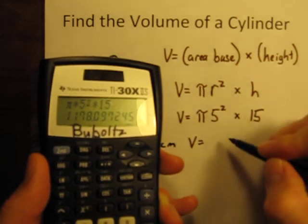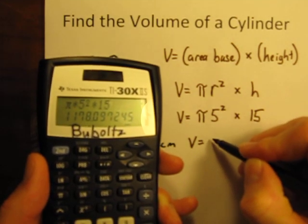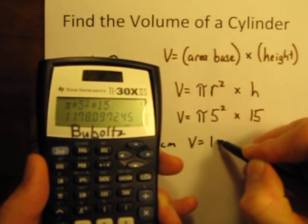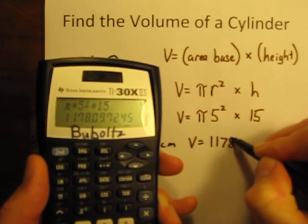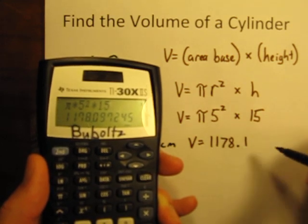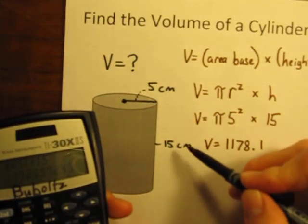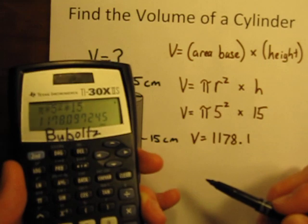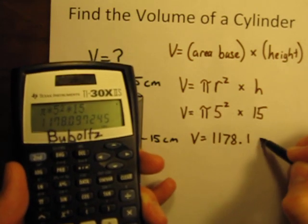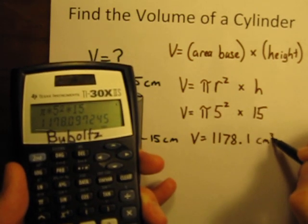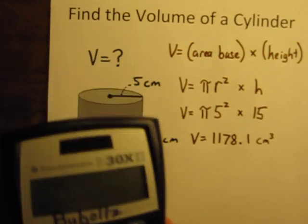Equals, and the answer that we get is, let me round to the nearest tenth. We'll say 1178.1, and what are the units? All of these lengths are measured in centimeters, so we'll say that this is in centimeters cubed. Volume is always in cubic units.